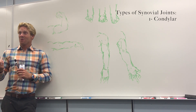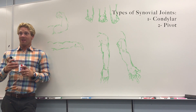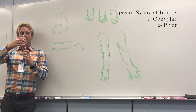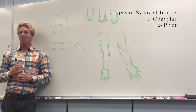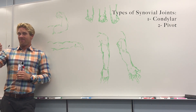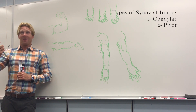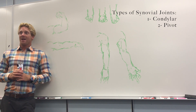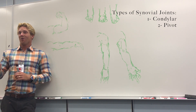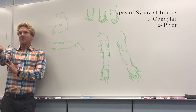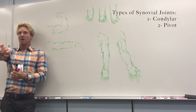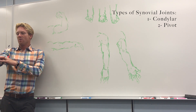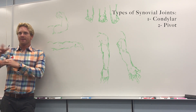Which leads us to the second type of joint, called a pivot joint — a joint that allows two bones to simply spin like this, allowing one bone to spin next to another, but without any other motion. You get that between the first and second vertebrae, your atlantoaxial joint, which allows you to shake your head like this and say no. Another example is the joint that connects your radius to your ulna, allowing the radius to spin next to the ulna, which allows us to turn our wrist.